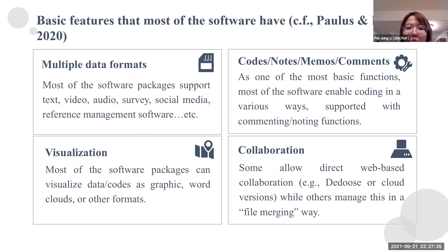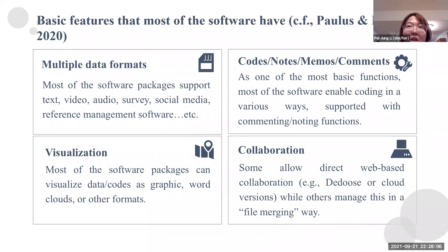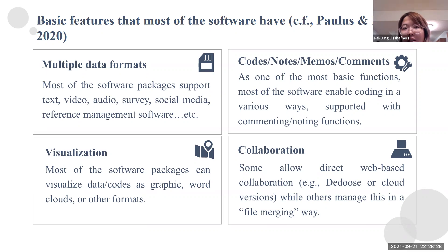Most QDAS software share certain commonalities. For example, they usually allow multiple data formats. Most support text-based data such as Word documents and PDF files, but they also support video and audio data, which many qualitative researchers record in the field. They also support survey data, and now more studies are working with social media — some software also supports collecting web pages or Twitter data. Some also allow you to import files from reference management software, so you can easily manage your literature review within the package.